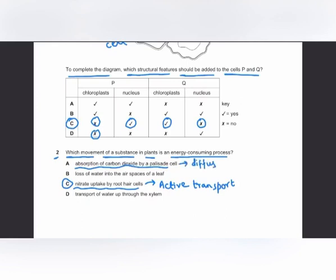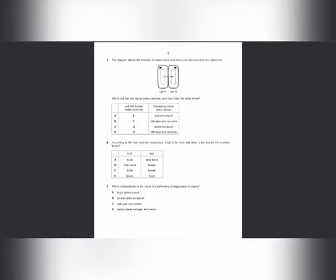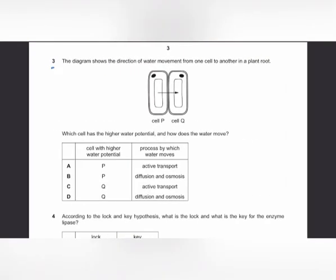Loss of water into the air spaces of a leaf is due to evaporation, which uses heat energy and does not require energy from respiration. Transport of water up the xylem vessels is passive — it is due to transpirational pull and does not require energy from respiration.